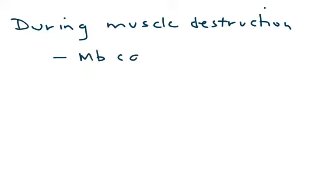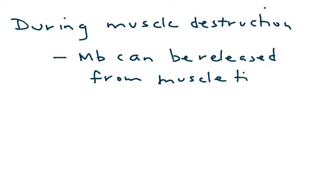Well, during states of muscle destruction, myoglobin can be released from the muscle and eventually be found in high quantities in the urine.